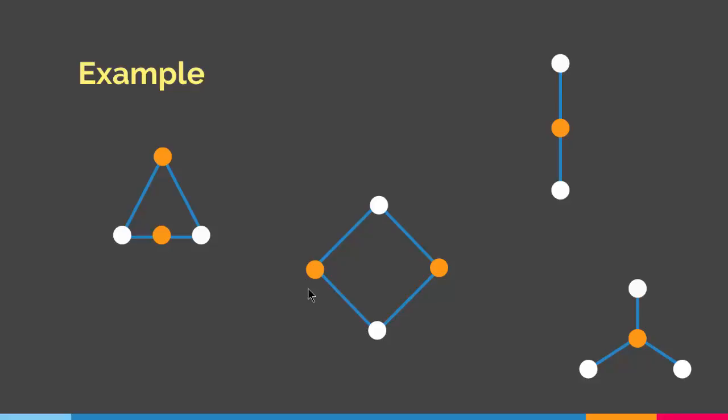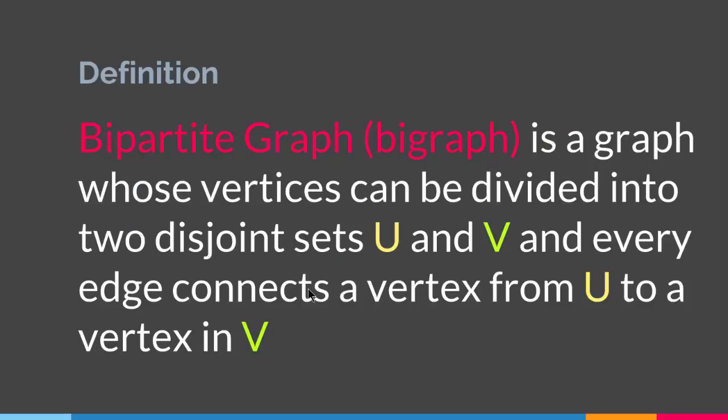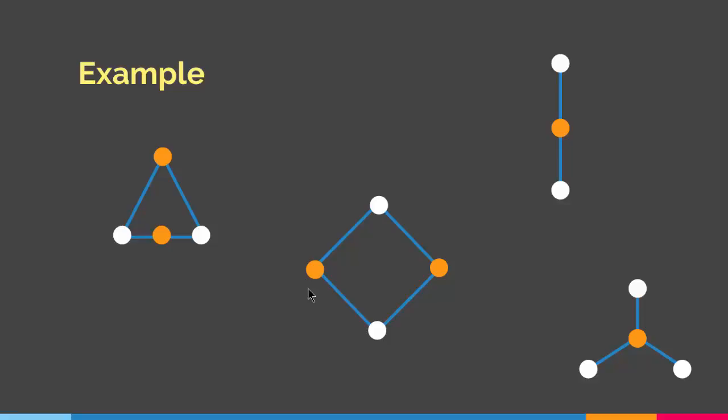Every edge connects two vertices from two different sets, which is the definition of a bipartite graph: a graph whose vertices can be divided into two disjoint sets U and V where every edge connects a vertex from U to a vertex in V. To check if a graph is bipartite, you color the vertices and verify that every edge connects two vertices of different colors.